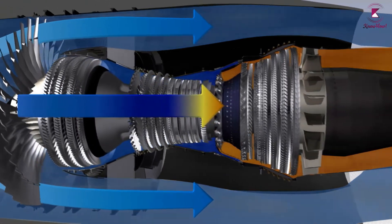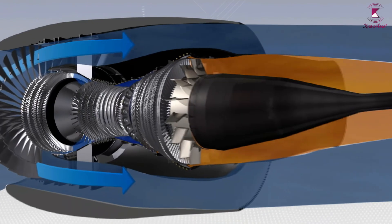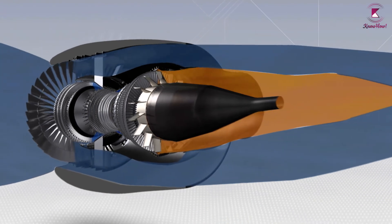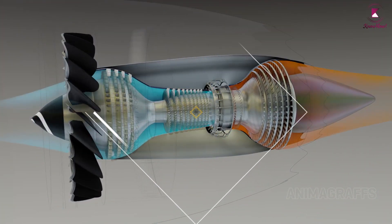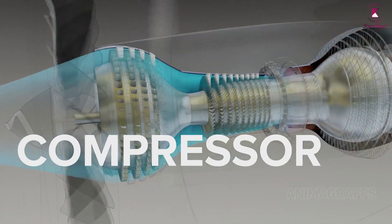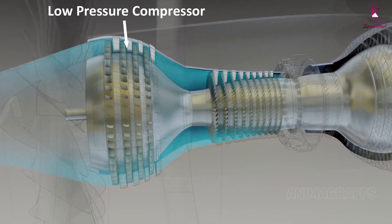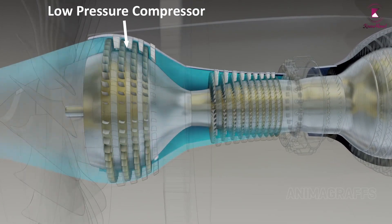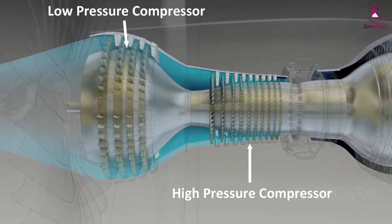While the remaining part of the air — bypass air — moves outside of the engine core through a duct. After suction, the air enters into a low-pressure compressor, which increases the pressure of the air according to requirements, and sends it into a high-pressure compressor.